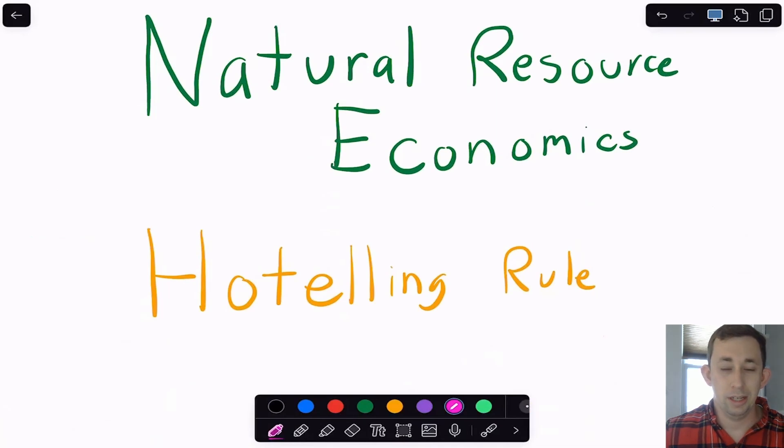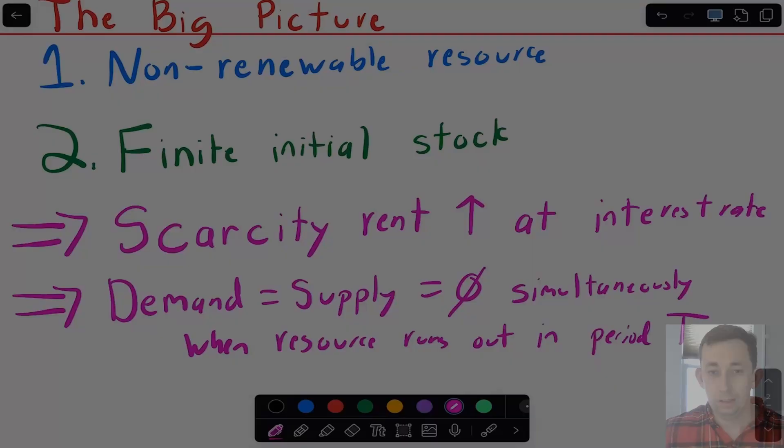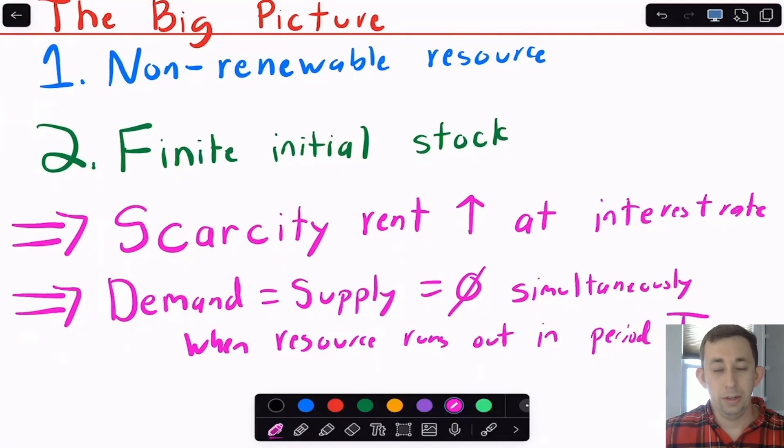And as usual, timestamps are below if you'd like to jump around. But let me give you just the big picture. So the big picture is we've got a non-renewable resource and we've got a finite amount of it in stock. What Hoteling basically said, what the Hoteling rule basically is,